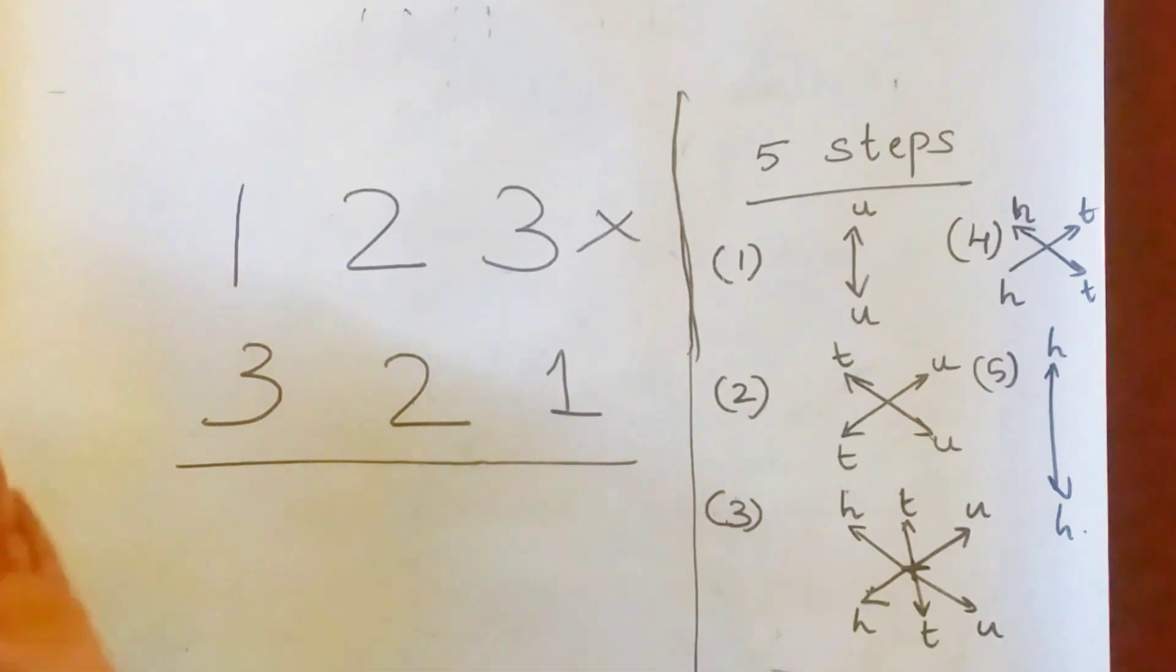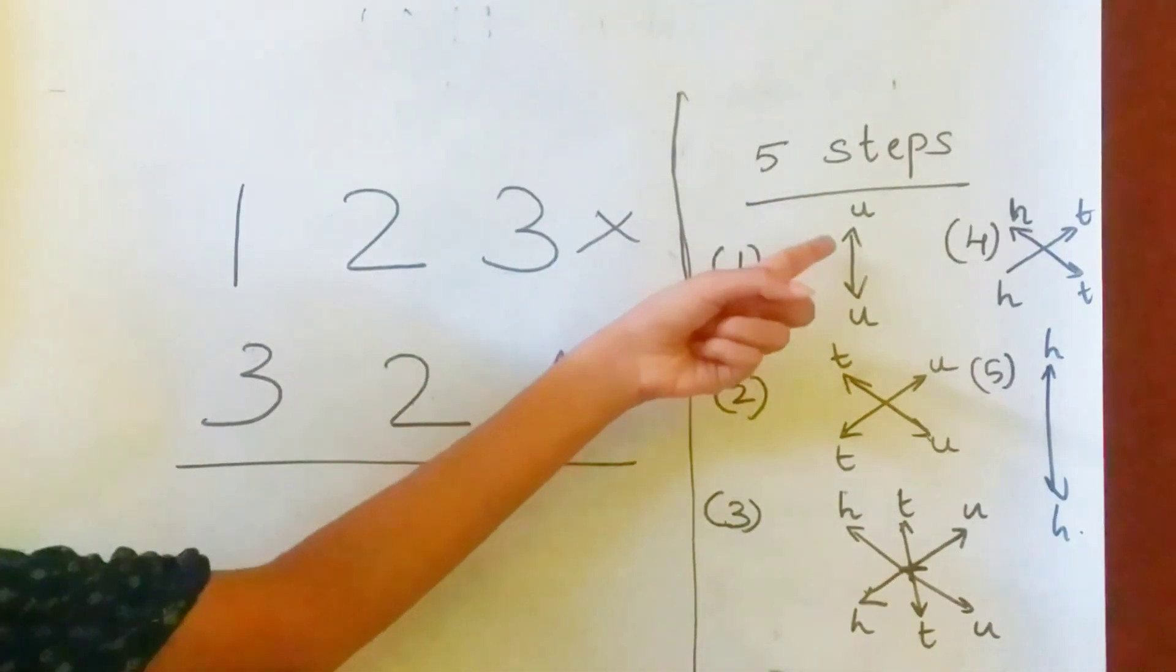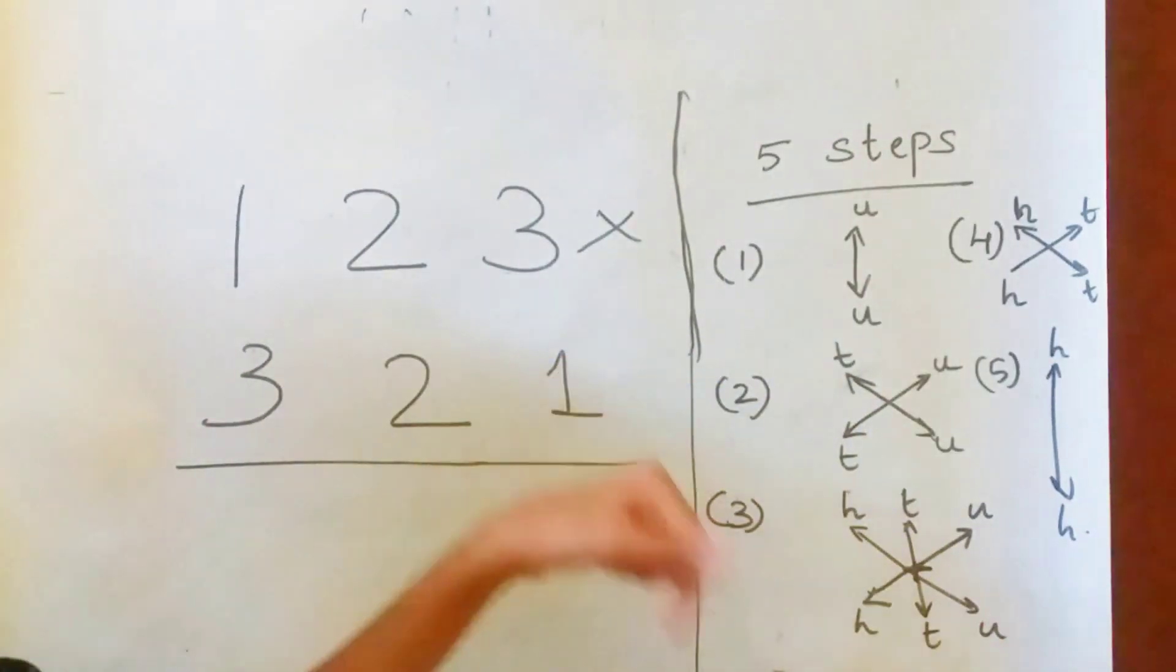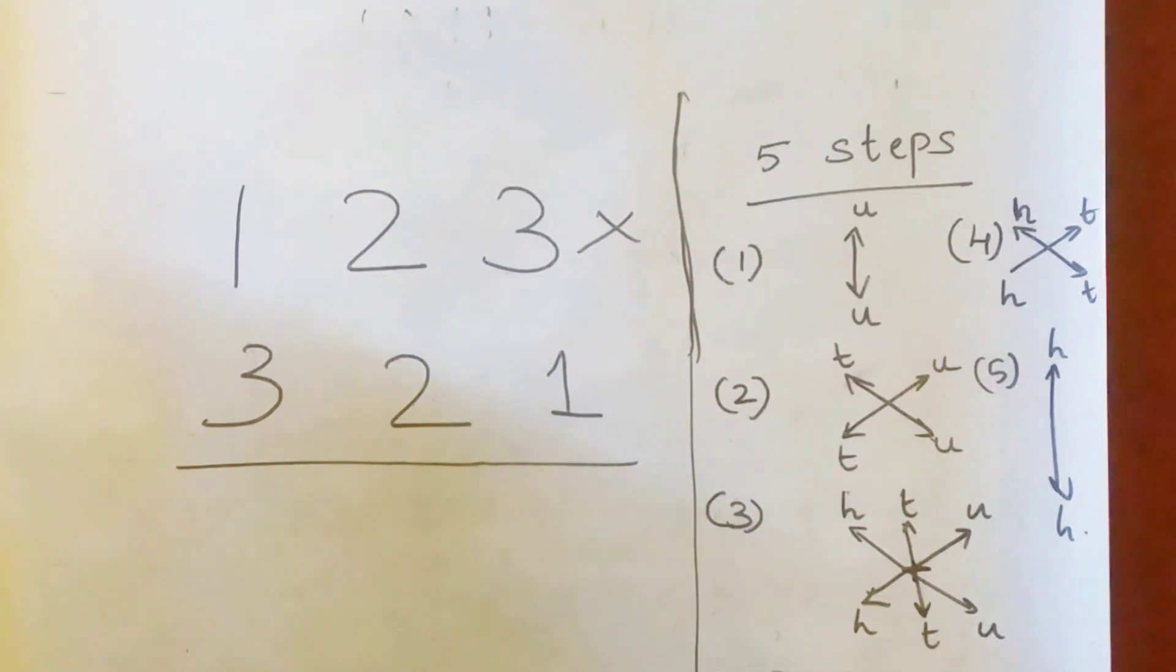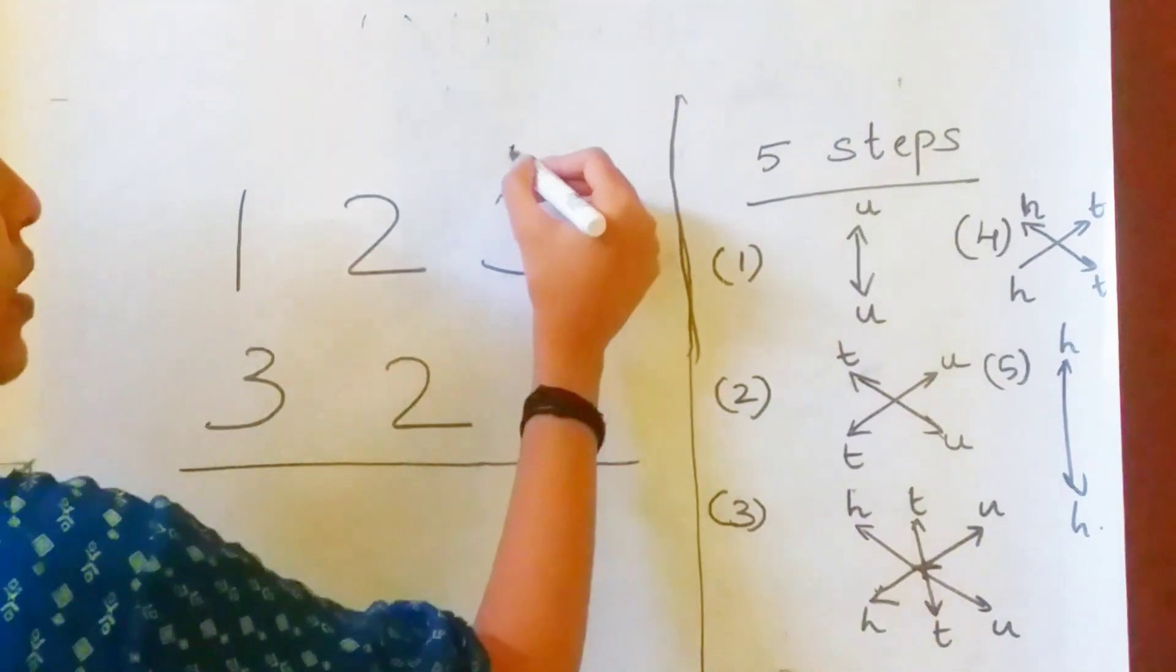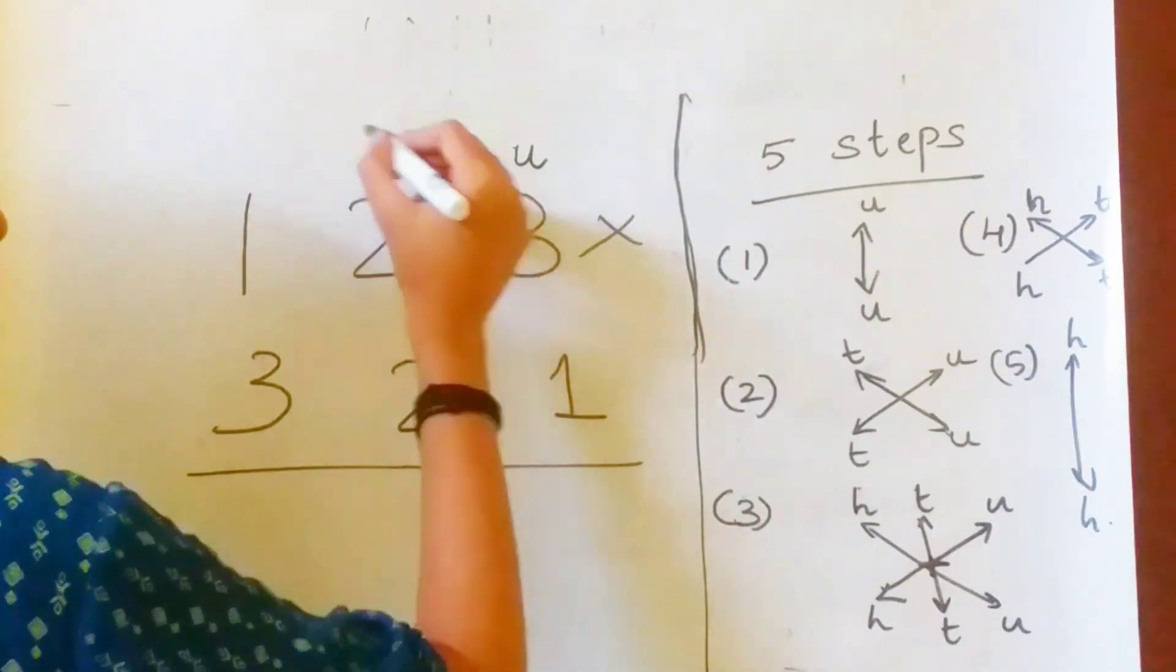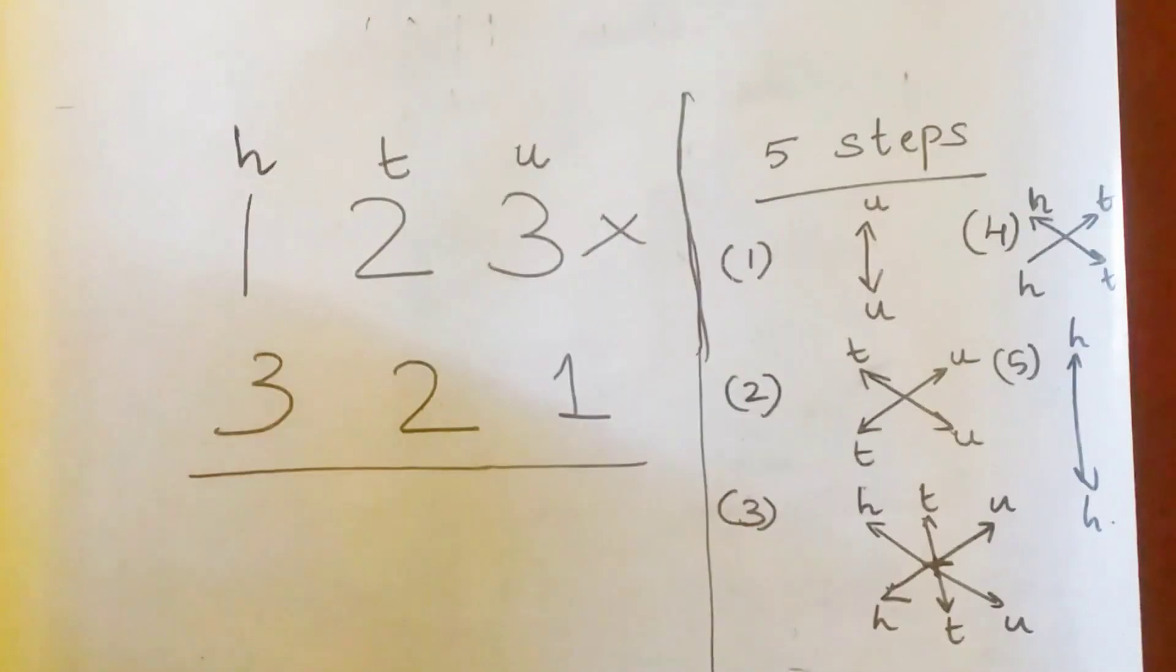Before moving to the example, these are the five steps that I am going to follow. Here U represents unit space, T tens place and H hundreds place. So our first step is to find the unit space, tens place and hundreds place of the given number. So this is the unit place, tens place and this is the hundreds place.